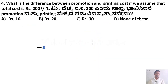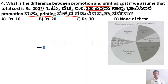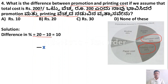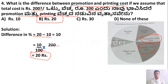The next question: what is the difference between promotion and printing cost, assuming total cost is Rs. 200? Promotion cost is 10% and printing cost is 20%. The difference is 20 − 10 = 10%. So: 10/100 × 200 = Rs. 20. Option B is the correct answer.